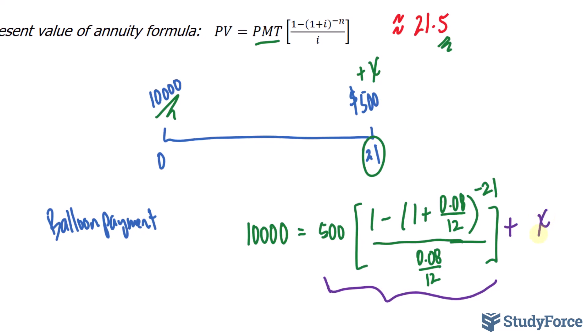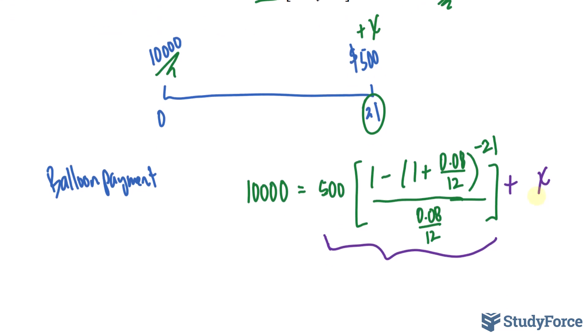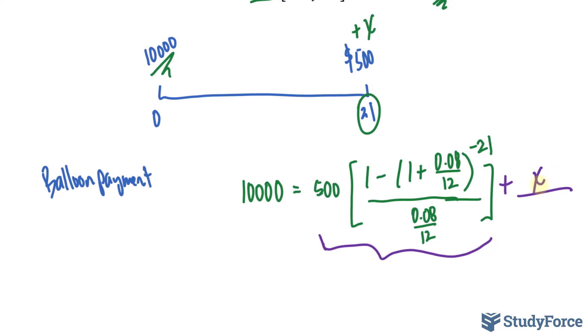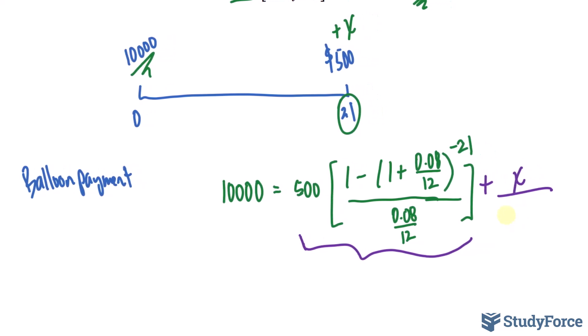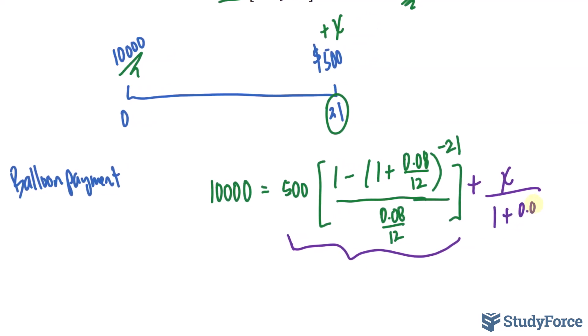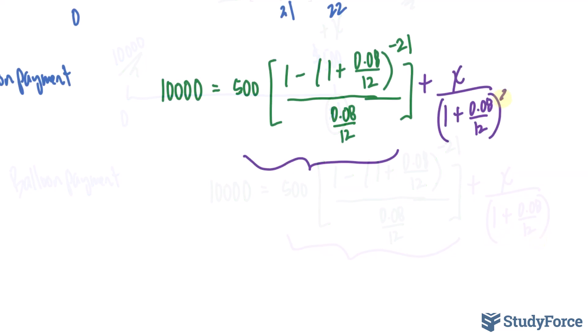But this extra value X that we owe needs to be discounted 21 periods as well. Just as this $500 is discounted 21 periods, this value of X must also be discounted 21 periods. We represent that by taking the value of X, this unknown future value, and dividing it by 1 plus 0.08 divided by 12 raised to the power of 21. I'll now show you how to solve for X.